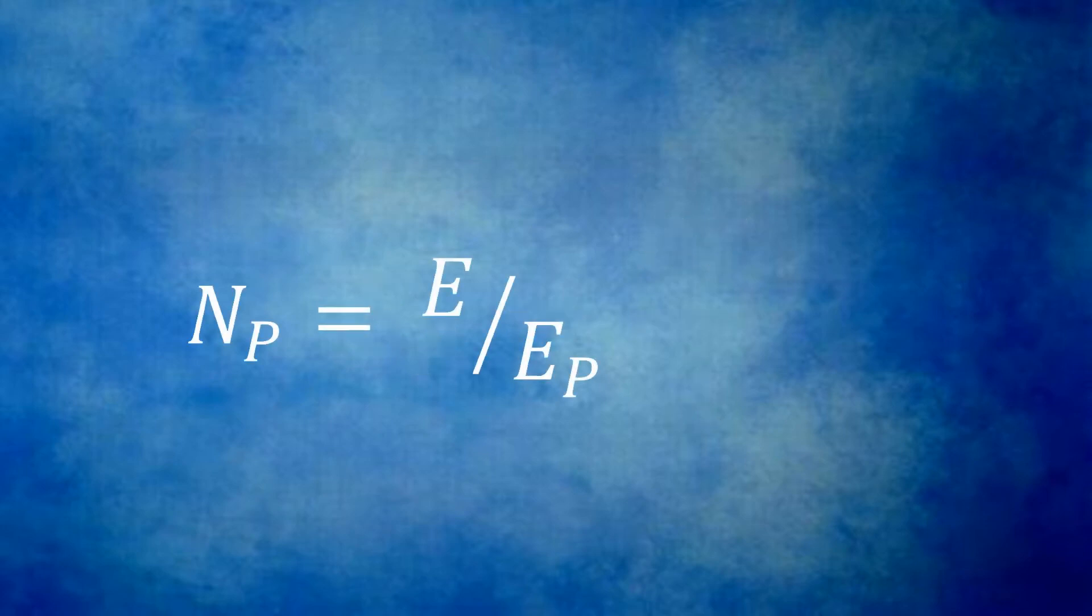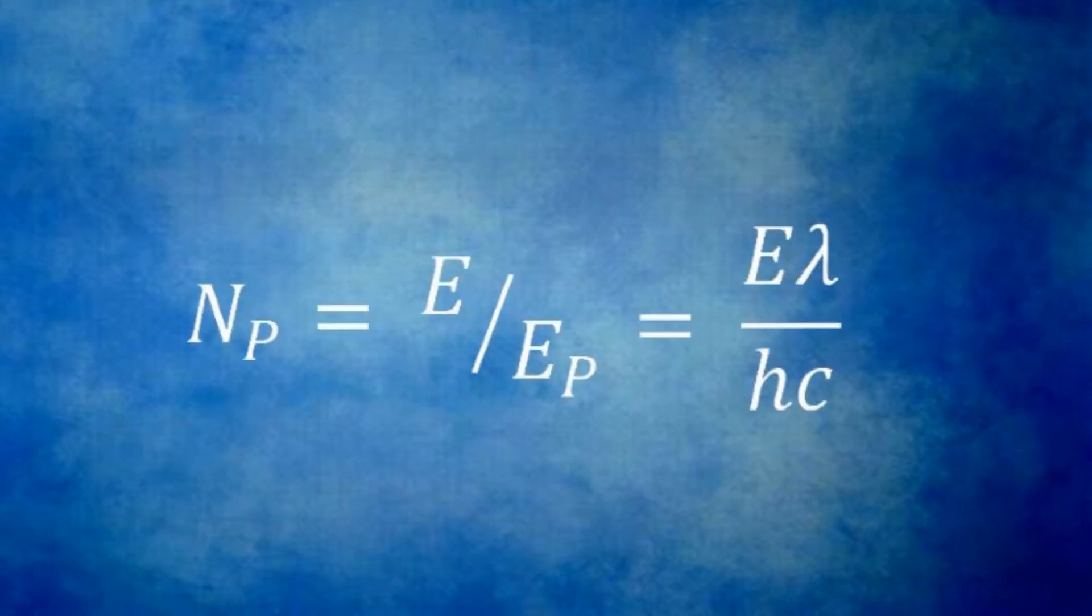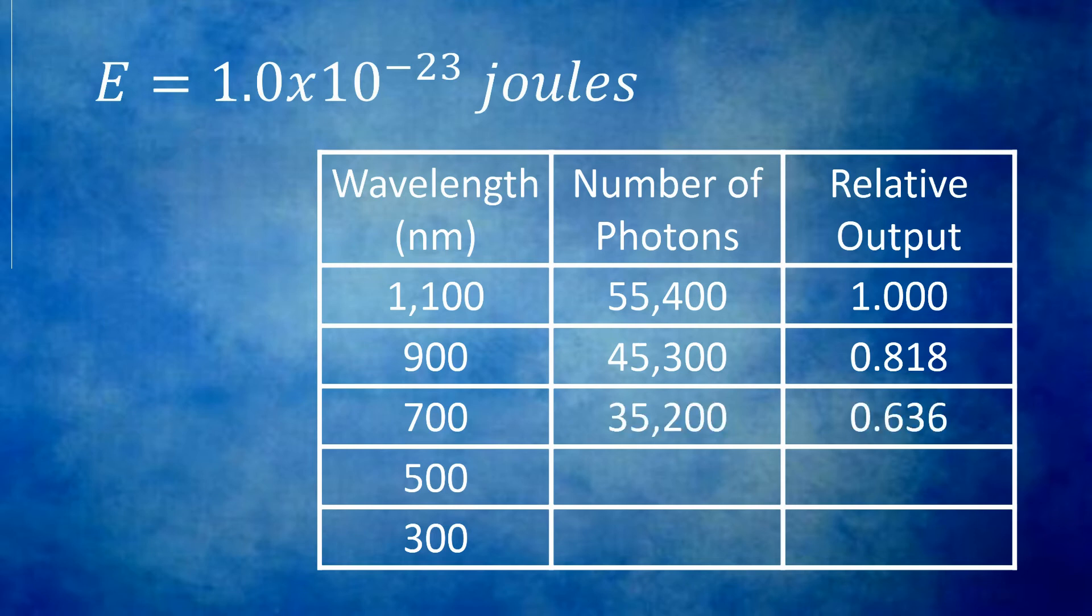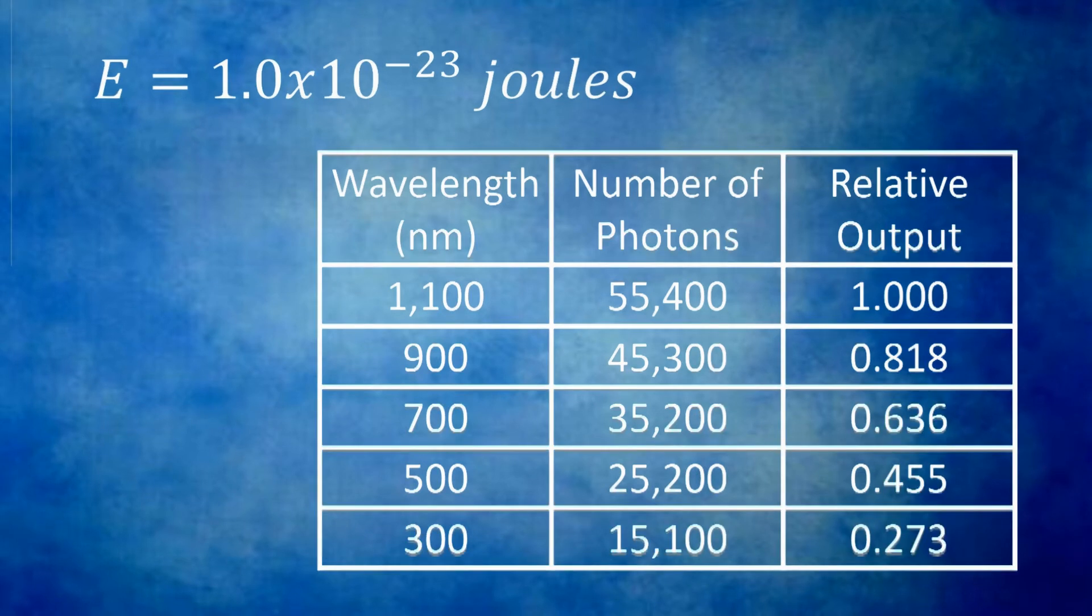If there is a fixed energy of light, we can compute the number of photons, given that formula. Let's quickly calculate what this would be for several wavelengths. We'll create a table and assume a certain fixed energy level. For each wavelength, we'll calculate the number of photons and the relative output of an ideal image sensor with a quantum efficiency of 100%.